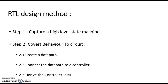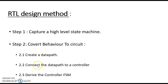The procedure for RTL design: the first step is to capture the behavior using a high level state machine, which captures the behavior of the system. The main difference from FSM is that here we use a high level state machine. Next, convert the behavior to a circuit. In order to do that, we need to create the datapath components, connect the datapath to the controller, and then derive the controller FSM. We will be converting the high level state machine into the FSM in the last step.